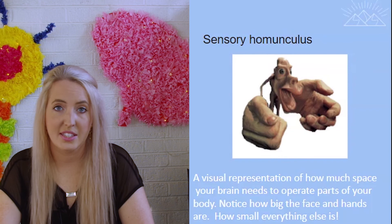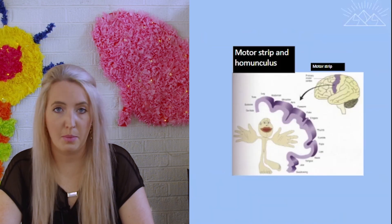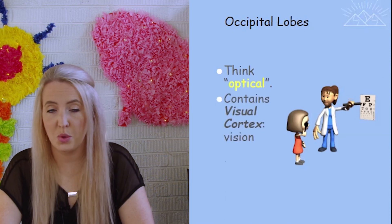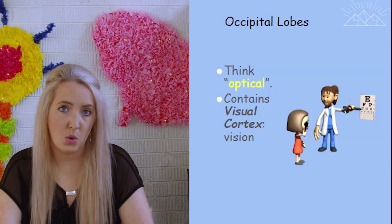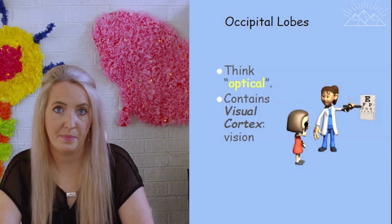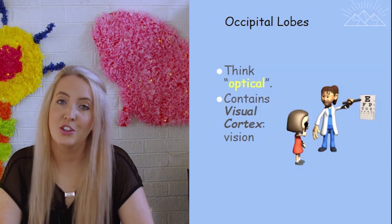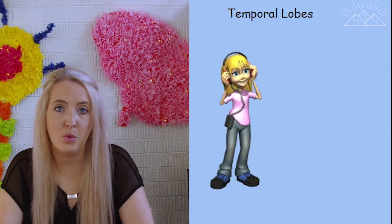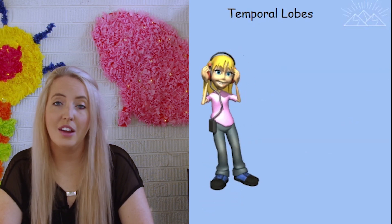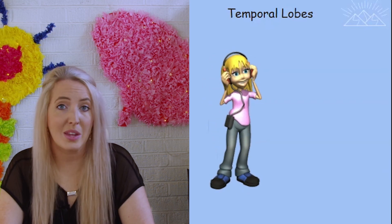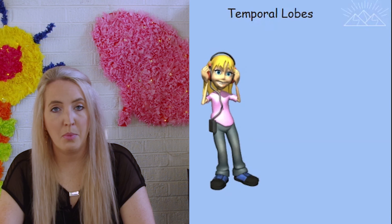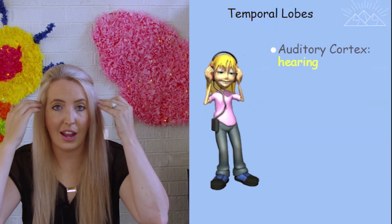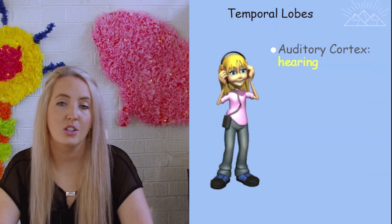On the back of our head we have our occipital lobe — you can think of occipital like 'optical.' The occipital lobe holds our visual cortex, and with visual, think vision. This lobe is responsible for our sense of sight, so everything you see goes from your thalamus to your occipital lobe and visual cortex. Last but not least, we have our temporal lobe, which is on both sides of our head. Think of temporal lobe like 'tempo' because we hear the tempo of music — the temporal lobe holds the auditory cortex.